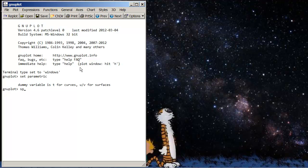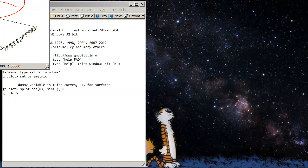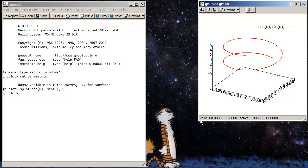So what do we do? We just type SPLOT. That's for three-dimensional plots. And say we want to plot cosine U, sine U, and U. We press enter, and then we get that plot. I'm just going to move this into our field of vision so we can see it.